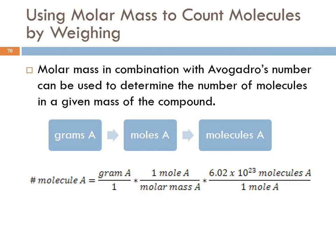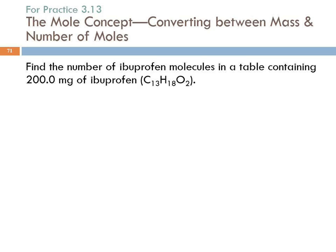We can use molar mass to count molecules by weighing, in conjunction with Avogadro's number. If we have a mass of a substance, we convert to moles using the molar mass, then convert to number of molecules using Avogadro's number. Example: find the number of ibuprofen molecules in a tablet containing 200 milligrams of ibuprofen — the chemical formula is C13H18O2. The molar mass will be used as a conversion factor.